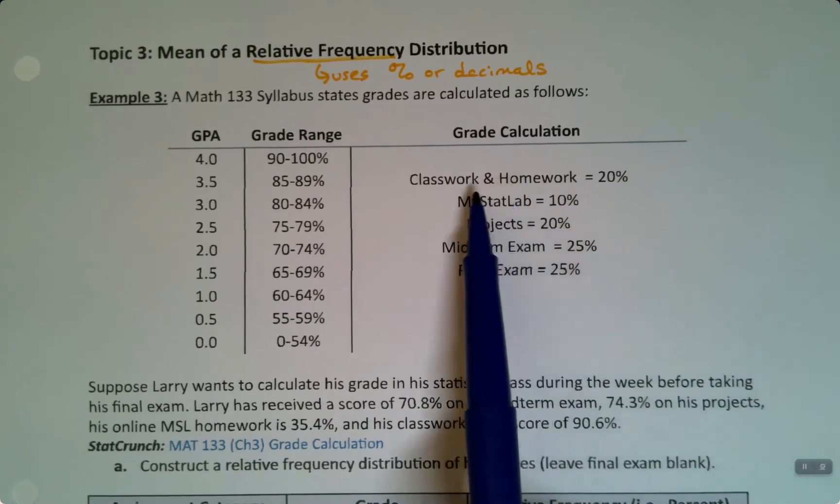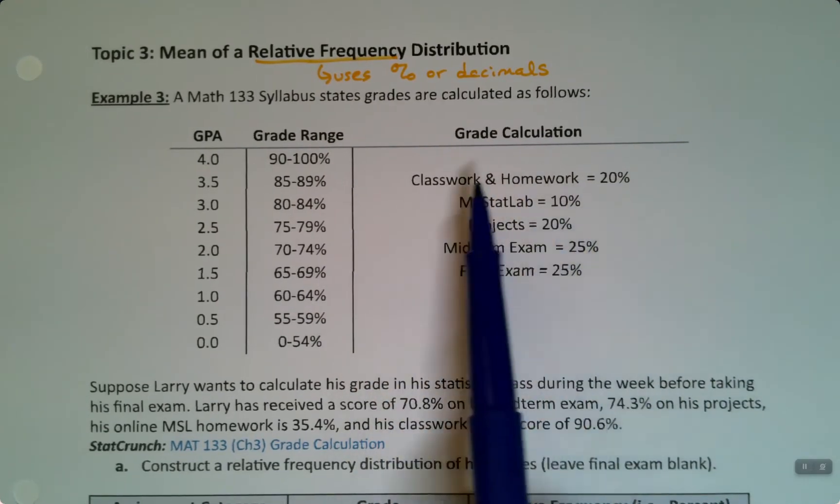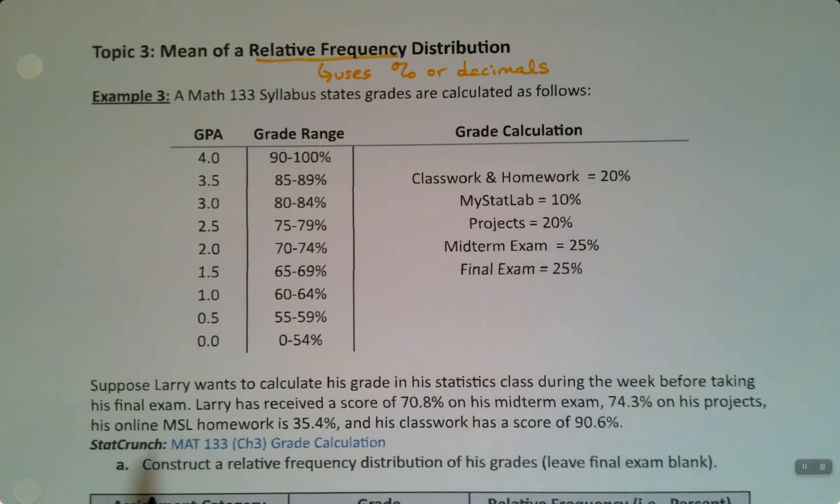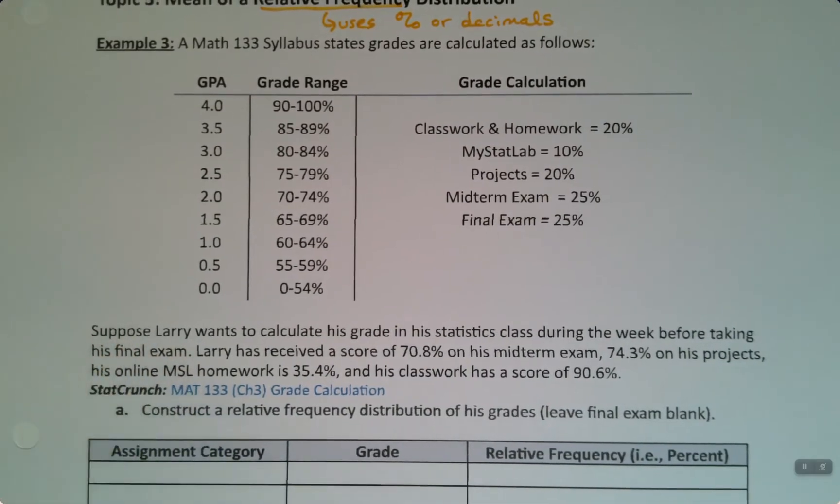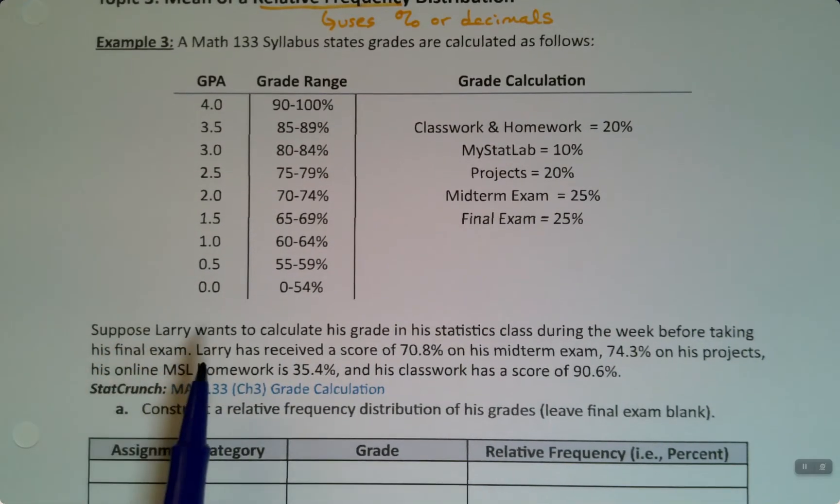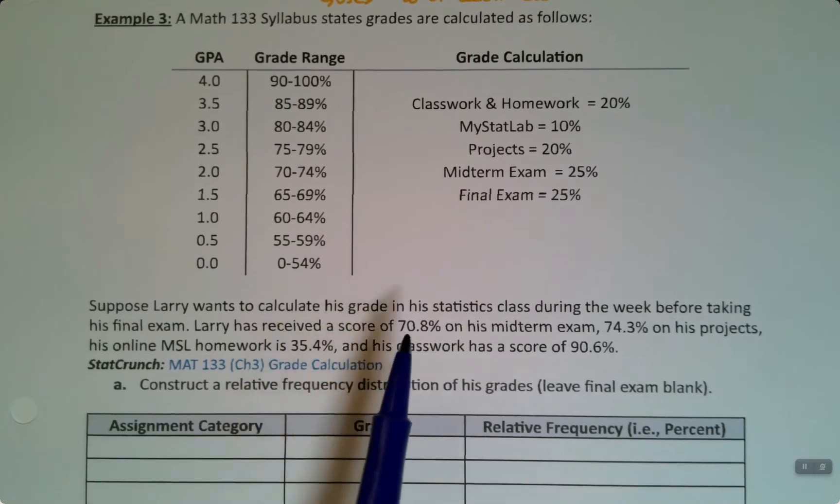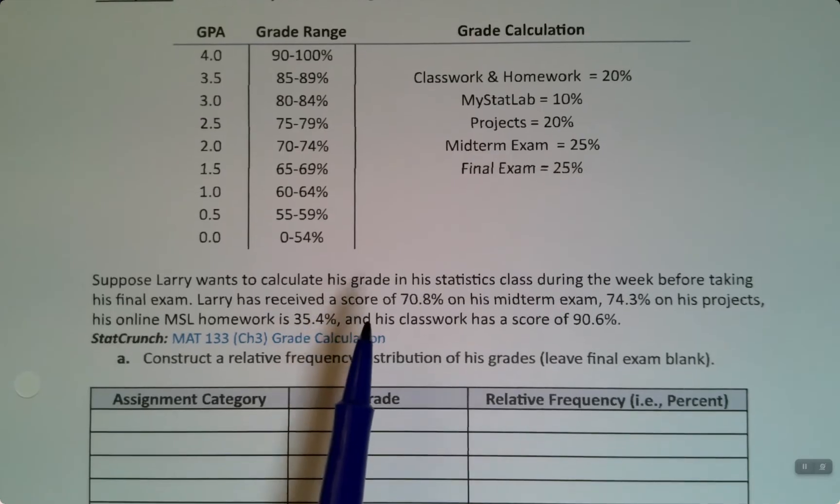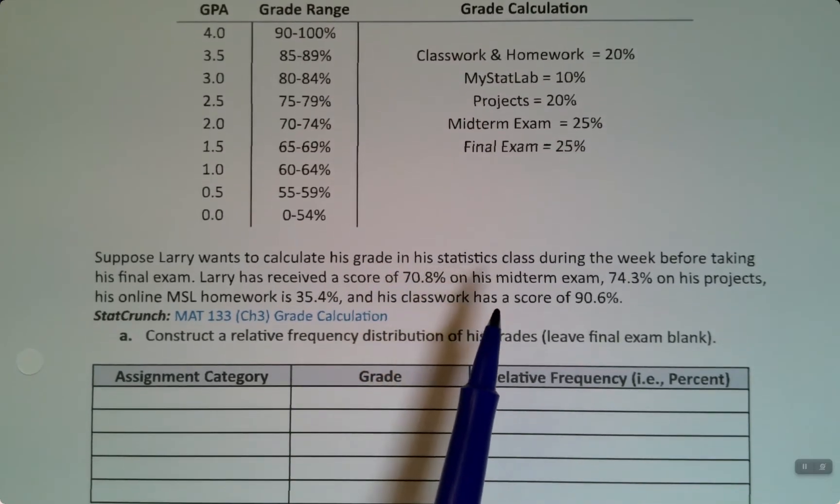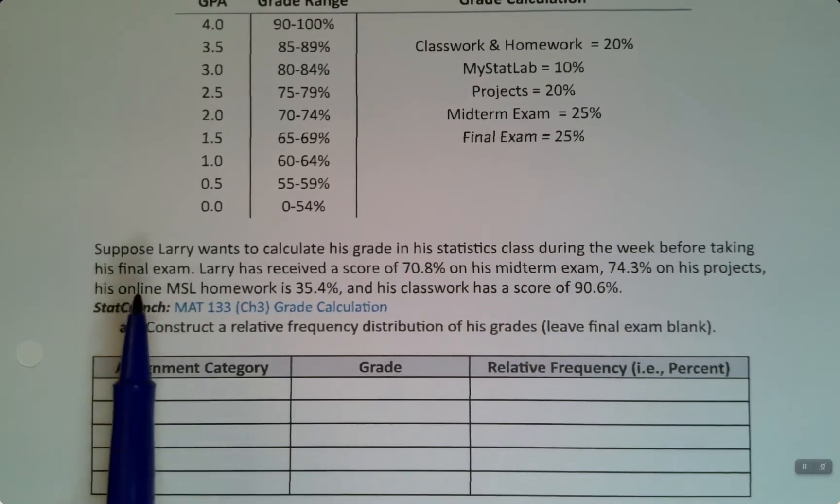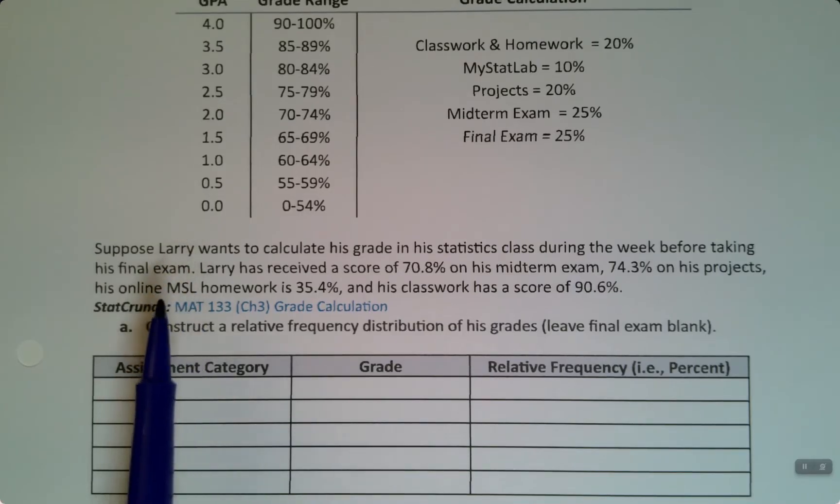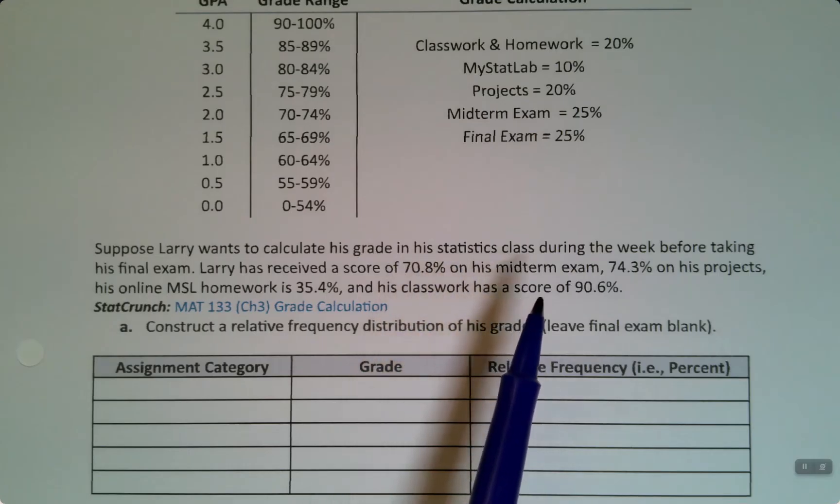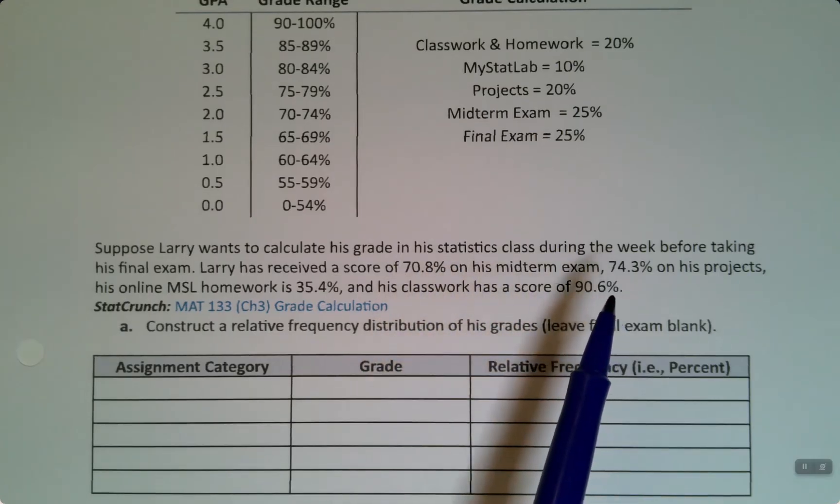We have syllabus values here for classwork, my stat lab, projects, and so on. We're going to use those values to figure out the grade for this student, Larry. Larry wants to calculate his grade in his statistics class during the week before taking his final exam. Larry has received a score of 70.8% on his midterm exam, 74.3% on his projects, his online my stat lab homework is 35.4%, and his classwork has a score of 90.6%.